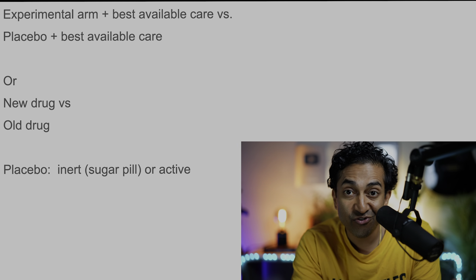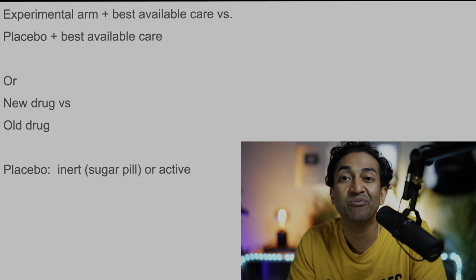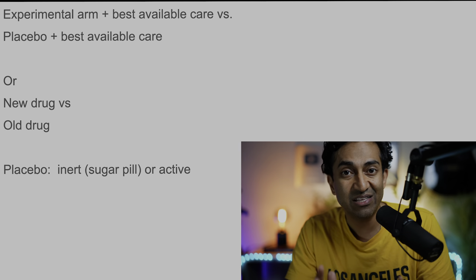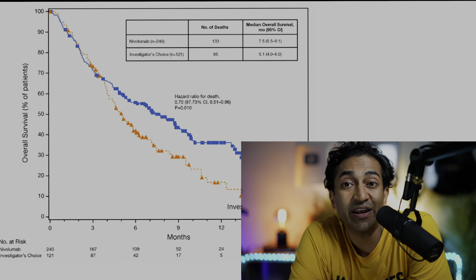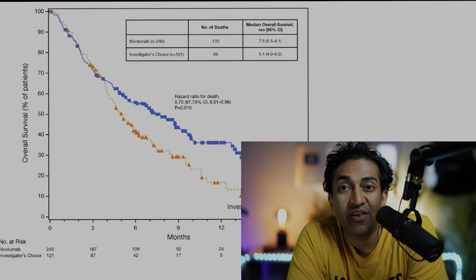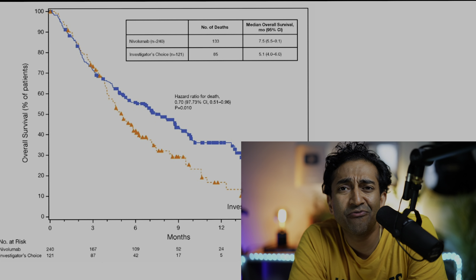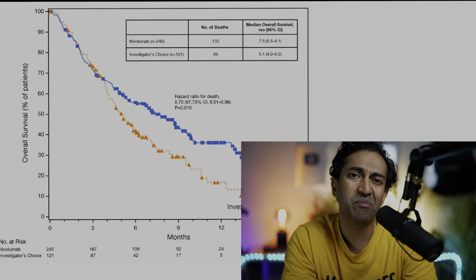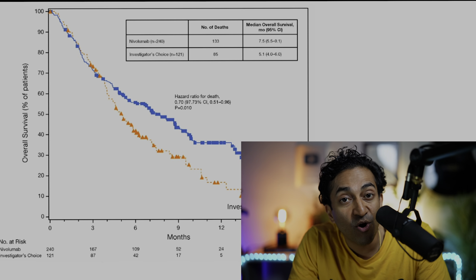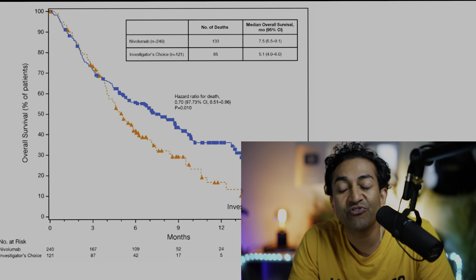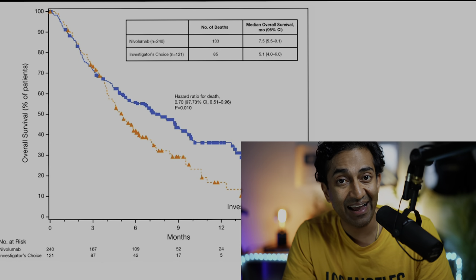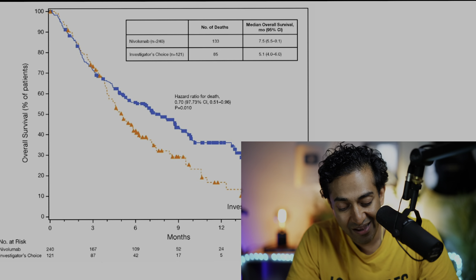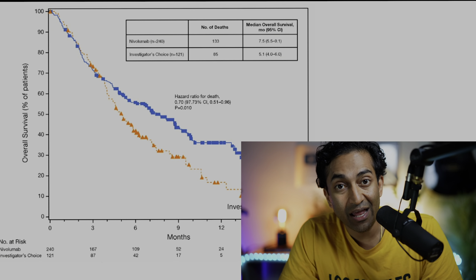We're going to talk about cancer drugs, cardiology stenting, vaccines, and more. This is one study that I think is an important one to talk about: Checkmate 141, which is nivolumab versus investigator choice chemotherapy in second-line head and neck squamous cell cancer.